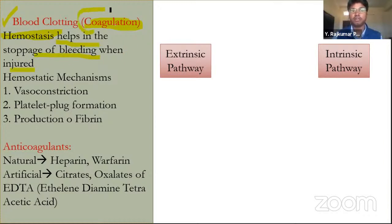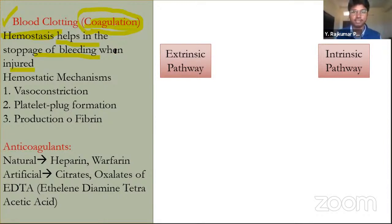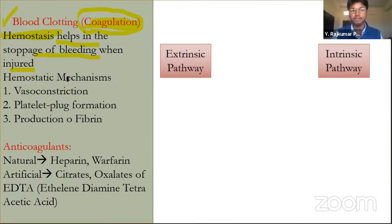Hemostasis is the blood clotting or stoppage of bleeding when injured. We have only five liters of blood in the body; if lost in high amounts it is a threat, because blood carries oxygen, carbon dioxide, nutrients, enzymes, and hormones. Loss of blood can stop organ functioning and lead to death, so there is a biological process called blood clotting.